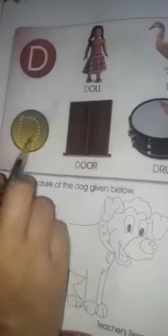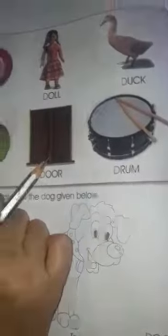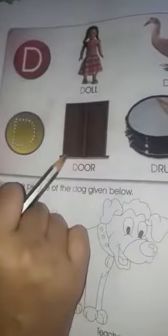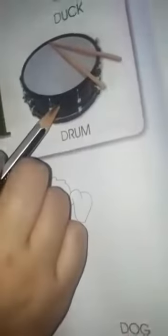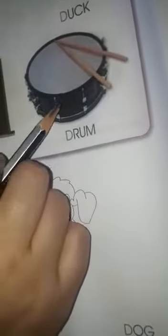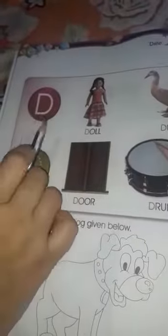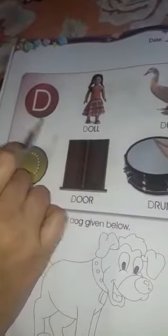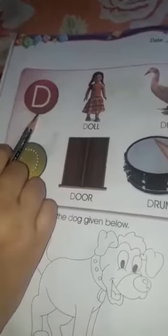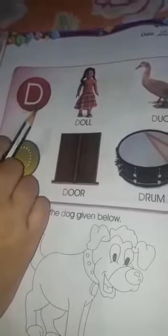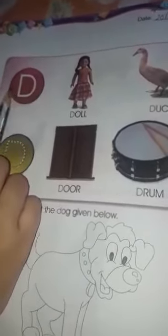Now here, D for door — you can see door. D for drum. We all know now this is a capital D. This is a capital D.